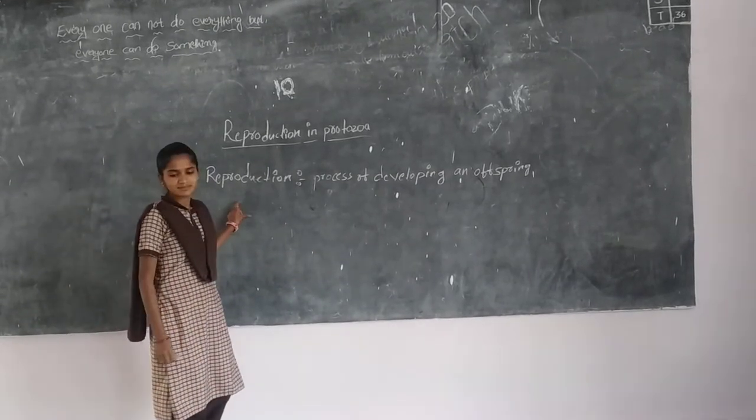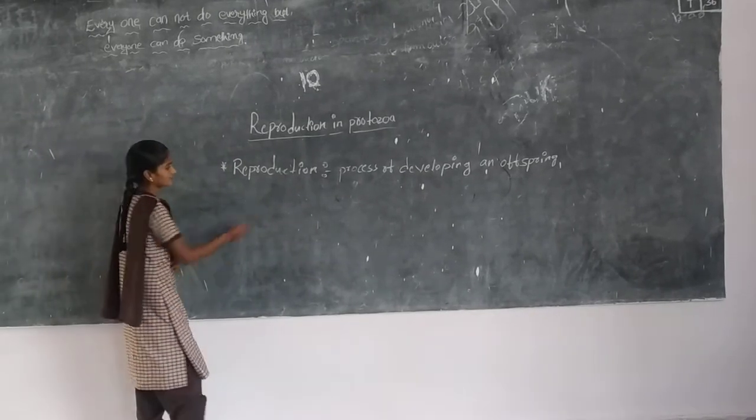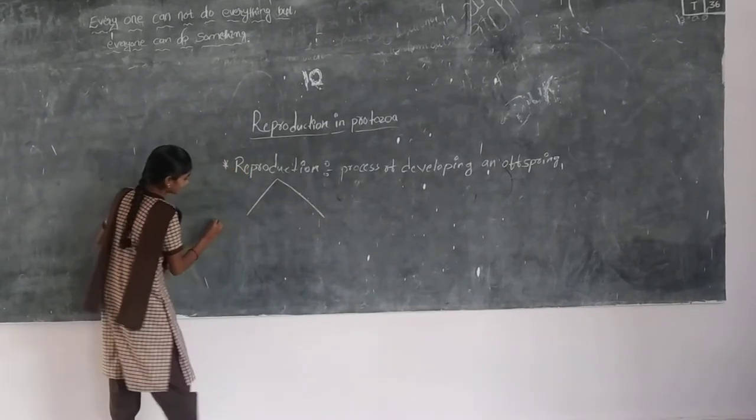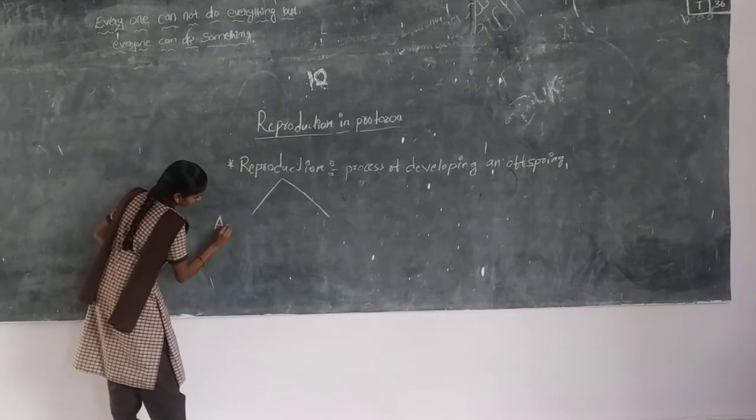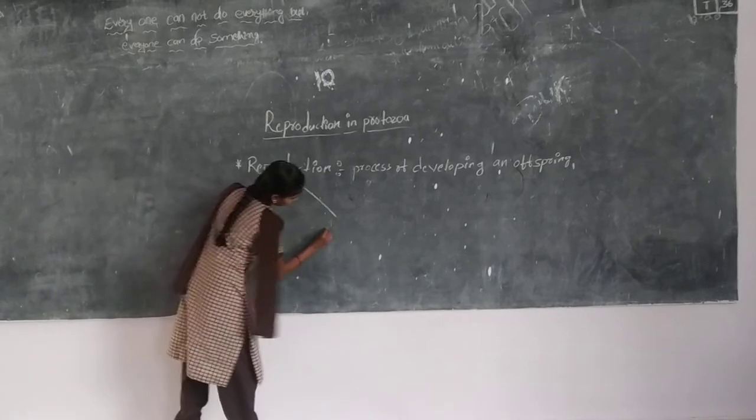And how many types of reproduction? Two types. Yes, reproduction is two types. One is asexual and another one is sexual.